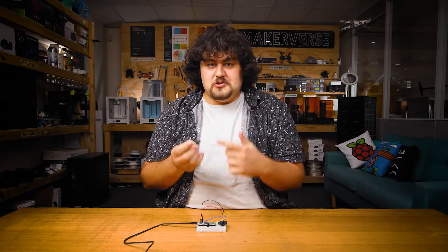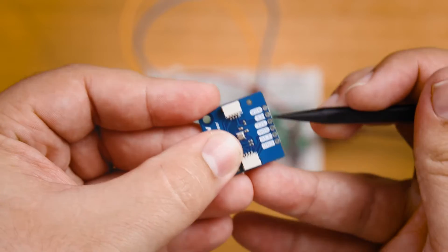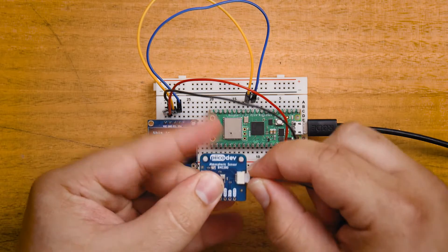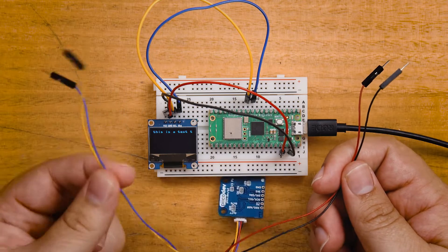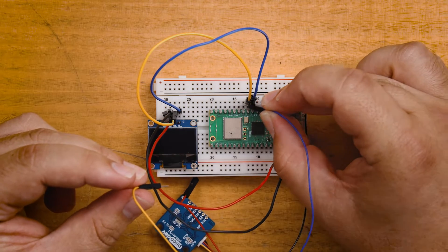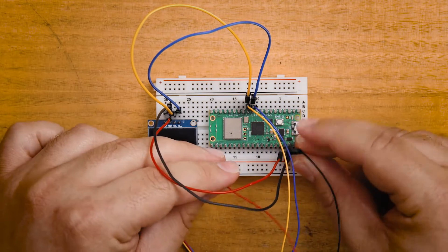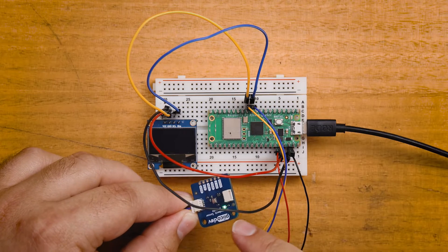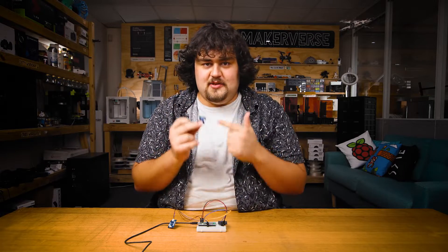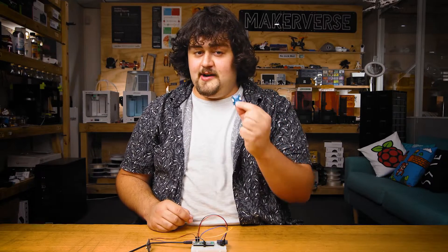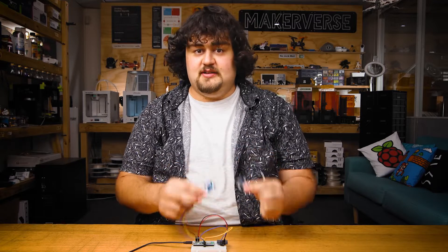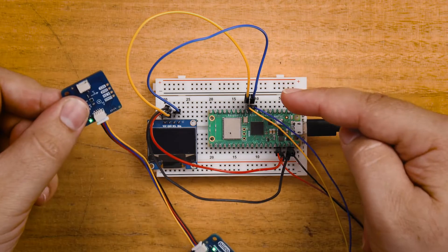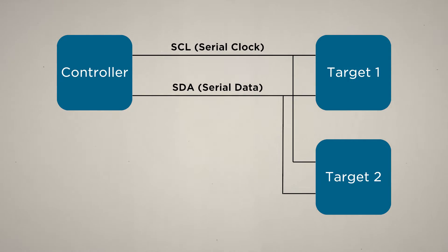Next, we're going to connect an atmospheric sensor module to read temperature, humidity, and pressure. We could solder pins and connect it like the OLED, but this module has a convenient connector. We plug SDA into the Pico's SDA, SCL into the Pico's SCL, then connect ground and 3.3V. If we wanted to add another sensor, this sensor is part of the same PicoDev ecosystem and shares the same connector, allowing us to daisy chain them together — all sharing the same I2C bus.